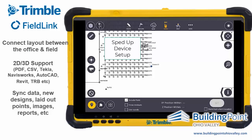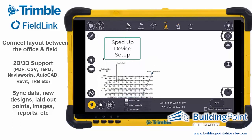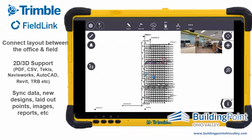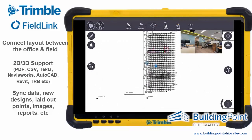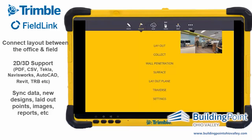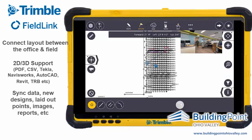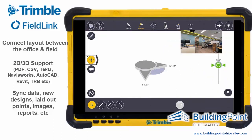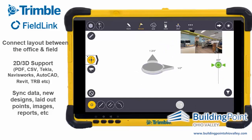Now that our device is fully set up, we're going to start laying out points in the field. Going into Measure and Layout, I'll start picking my points. I'm going to lay out a couple of points within tolerance and then a couple outside of tolerance. This will help us see the difference once we sync the data back to Trimble Connect — we can see which points were in tolerance and which were out.